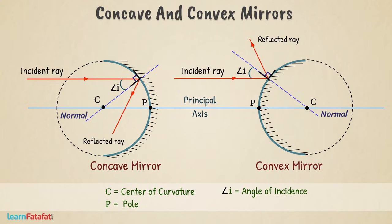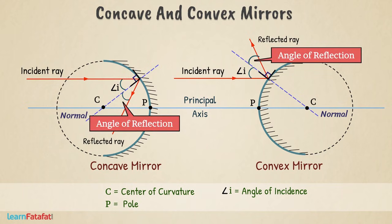The angle between reflected ray and the normal at the point of incidence is the angle of reflection. It is often denoted by angle r.